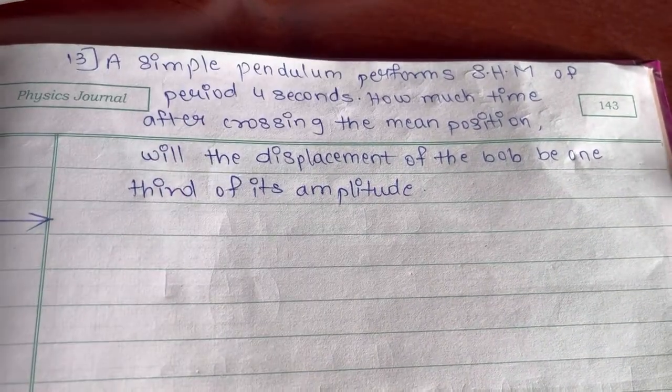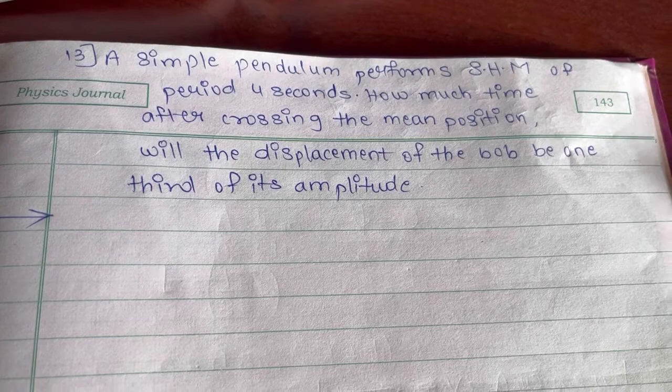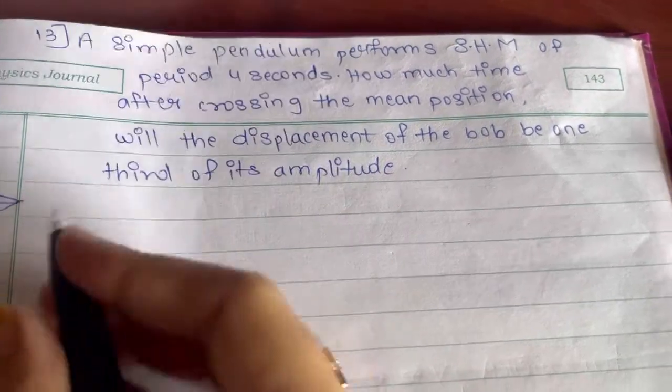Starting with numerical number 13. Now here a simple pendulum performs simple harmonic motion of period 4 seconds.